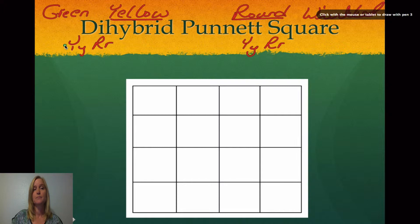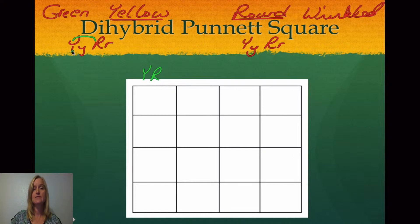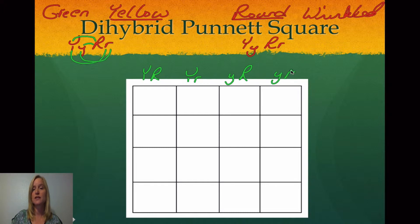With the father, we're going to figure out what options there are for these traits. This is often referred to as similar to the FOIL method in math. You take the first Y with the first R and put those letters above the first box, then the first Y with the second R above the second box, then the second Y with the first R above the last box. You do the same thing with the mother's genotype, which in this case happens to be the same as the father's genotype, so the letter combinations are going to be the same.